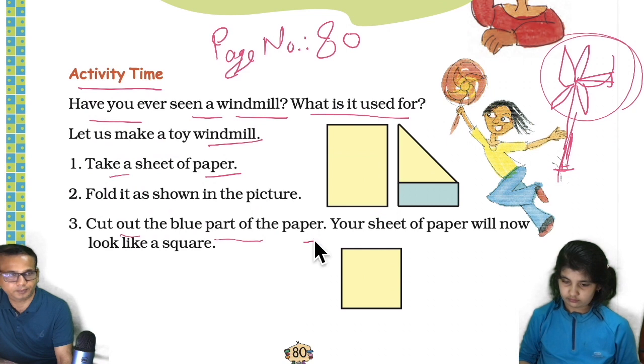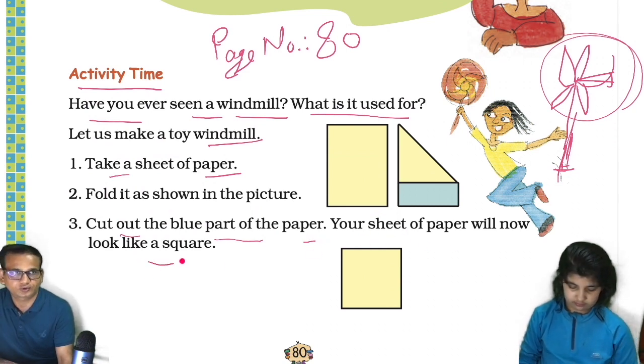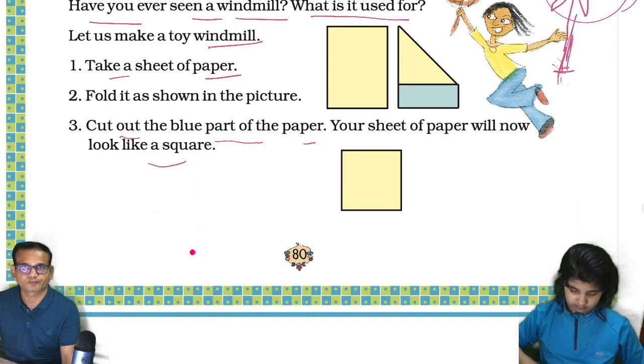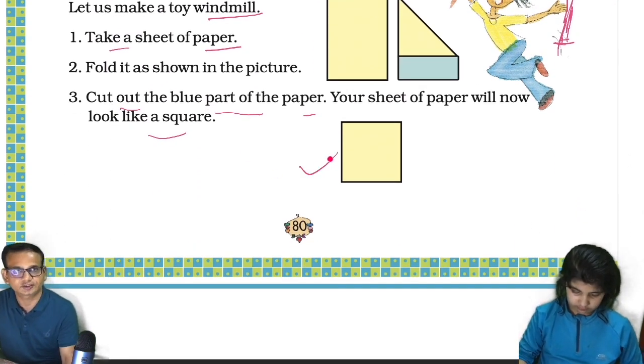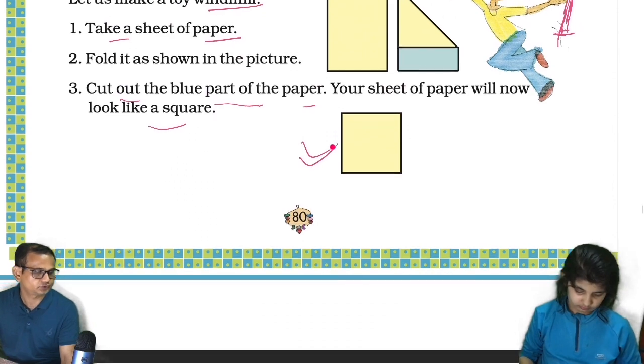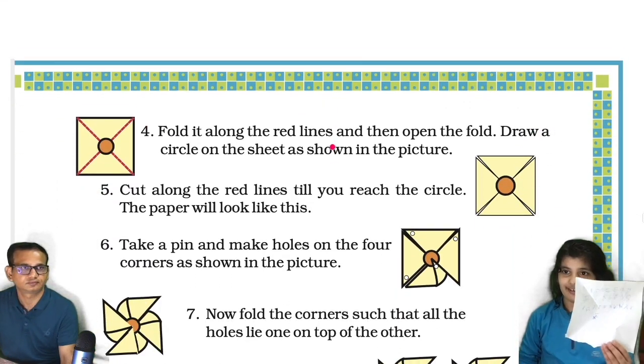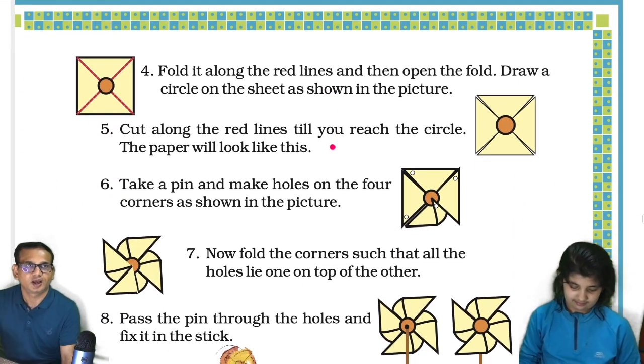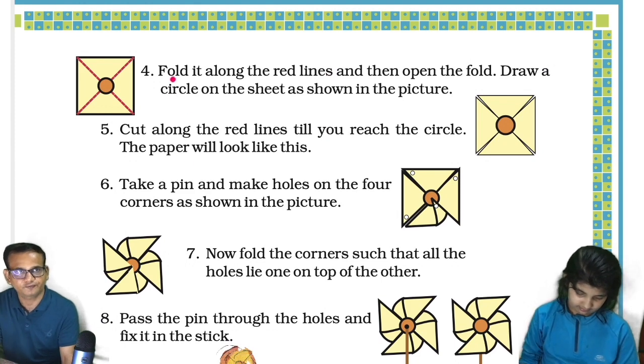Fold it as shown in the picture. Cut out the blue part of the paper. Your sheet of paper will now look like a square. Your sheet of paper will look like this square.